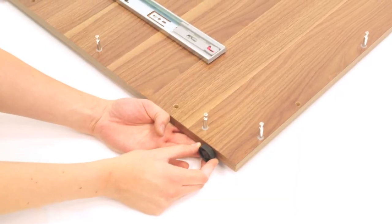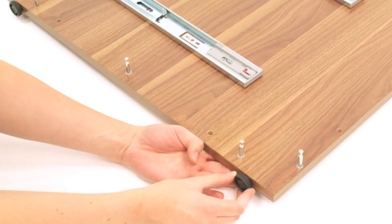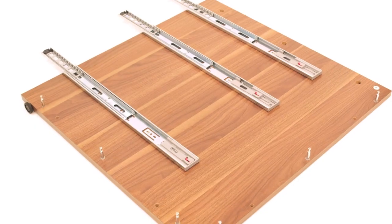Now, screw the remaining levelling feet into the side panels. The side panels should now look like this.